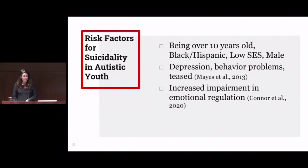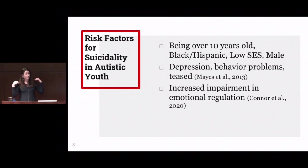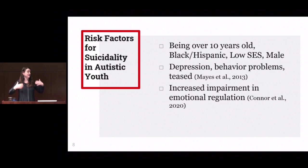Psychological factors that contributed to attempted suicide or ideation in almost half of the kids with autism included depression, behavior problems, and a history of being teased. A history of being bullied or teased is closely associated with limitations in subjective quality of life. Another study found that increased impairment in emotional regulation — both reactive dysregulation and the inability to up-regulate to experience excitement and happiness — was associated with suicidal ideation or behavior as reported by parents.